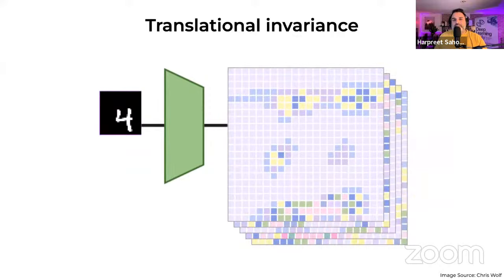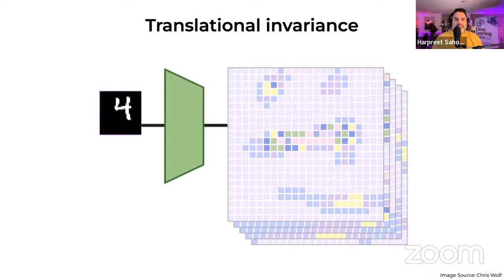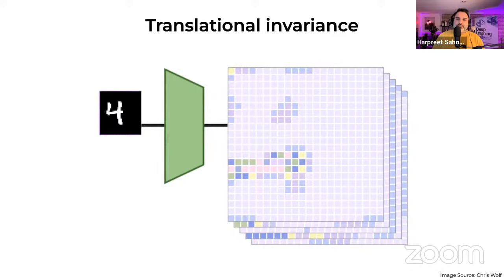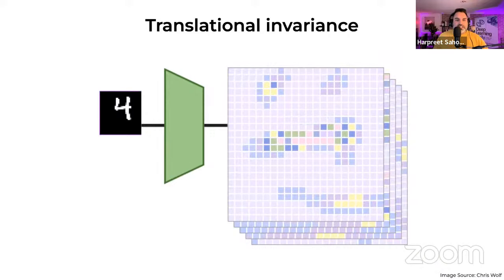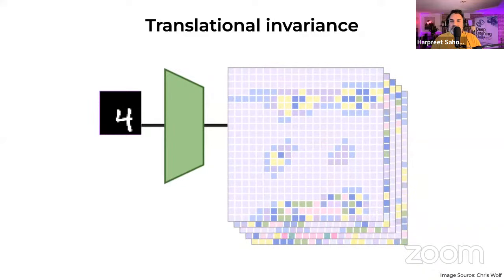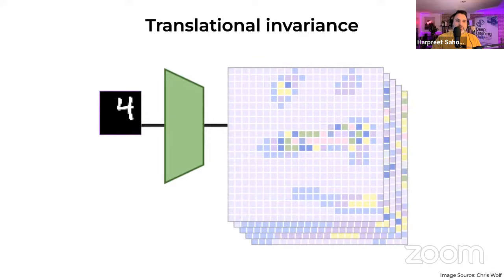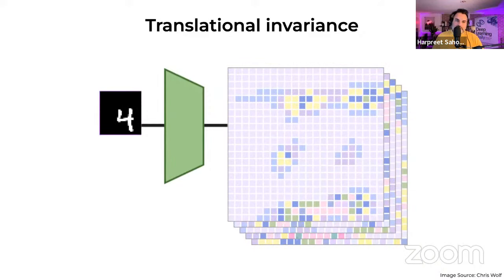Translational invariance is important because you're more interested in the presence of a feature rather than where it's located in the image. It's what allows a CNN to learn any spatial pattern. One essential characteristic of a convolutional neural network is the ability for the feature map to reflect any affine transformation made to the input image — any shift, tilt, stretch, or change in orientation. The feature map will provide an output shifted or tilted by the amount the input was subject to. Once the CNN is trained to detect things in an image, changing the position, shifting, tilting, stretching, or rotating that thing won't prevent the CNN's ability to detect it.